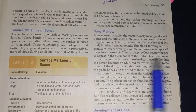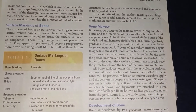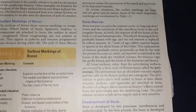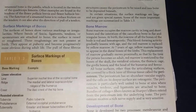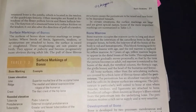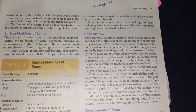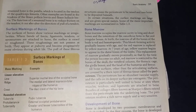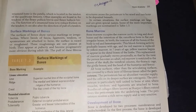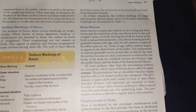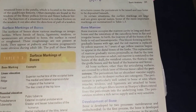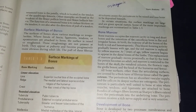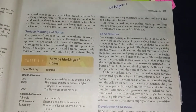Bone marrow is related to this chapter as information. In anatomy, no one asks you about the detailed anatomy of bone marrow — this is a topic of physiology. Here, you only need to know about red bone marrow and yellow bone marrow.